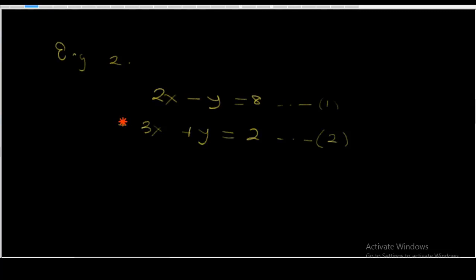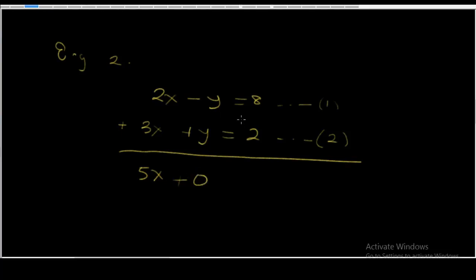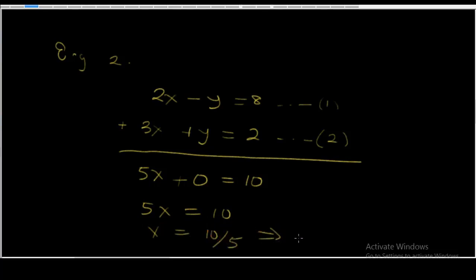So we put a plus sign and add up the equations. 2x plus 3x gives 5x; minus y plus y cancels to 0. Then 8 plus 2 is equal to 10. So finally our equation is 5x equals 10. Therefore x is equal to 10 over 5, which means x equals 2.